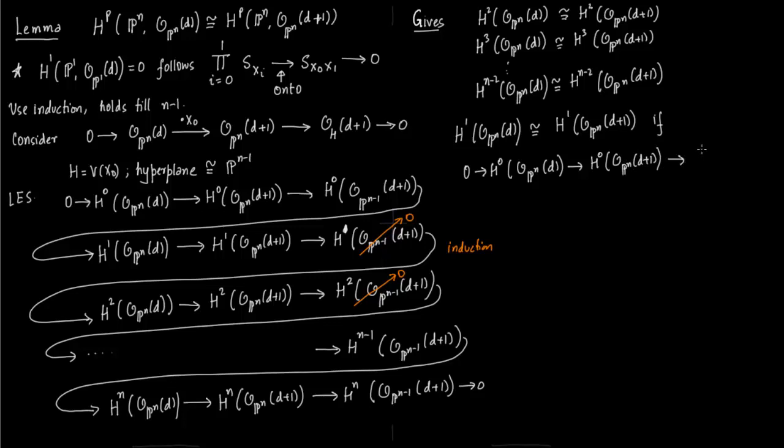Yeah this is clear because if we have a short exact sequence here then you have 0 on the left and 0 on the right of H^1(O_P^N(d)), H^1(O_P^N(d+1)) which makes it an isomorphism. But this is a short exact sequence.